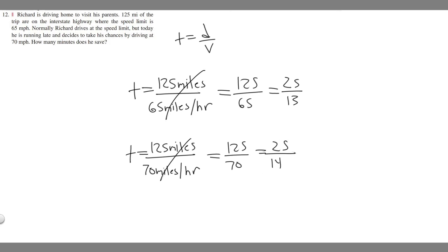So keep in mind that this is going to be in hours, so both of these are in hours. So if we subtract, we're trying to find how many minutes he saves. So if we take how long it's going to take him if he goes 70 miles per hour and we subtract how long it takes him to go 65 miles per hour, we're going to get the time he saves. So it's going to be 25 over 14 minus 25 over 13.